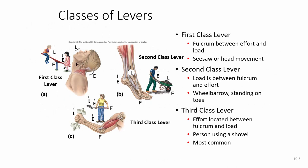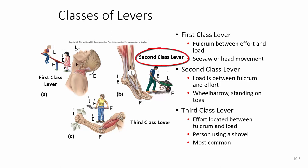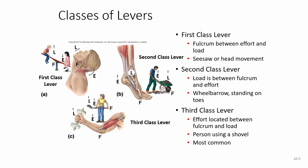In a first class lever the fulcrum is between the effort and load — just like a seesaw or teeter-totter, or anatomically, head movement. In a second class lever the load is between the fulcrum and the effort, like a wheelbarrow or standing up on the ball of your foot. In a third class lever the effort is between the fulcrum and the load — like a person using a shovel. This is the most common type of lever.